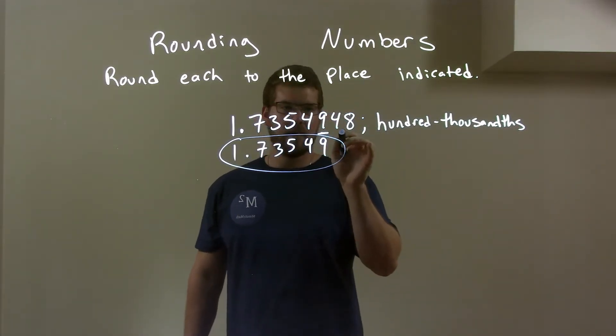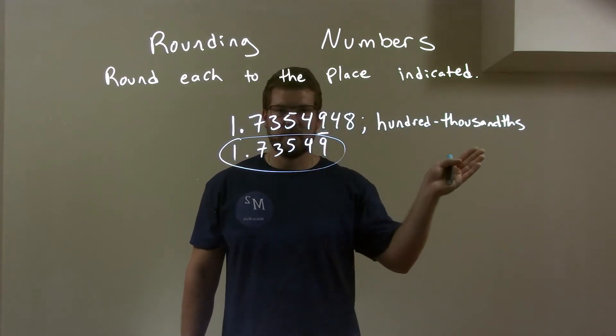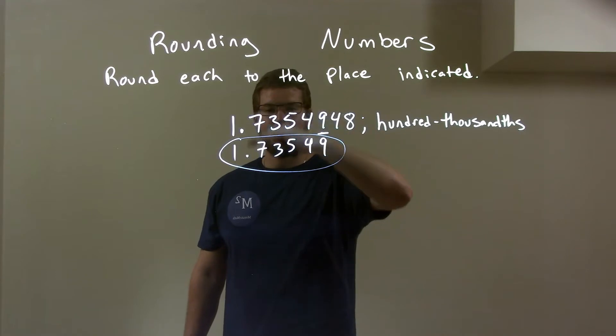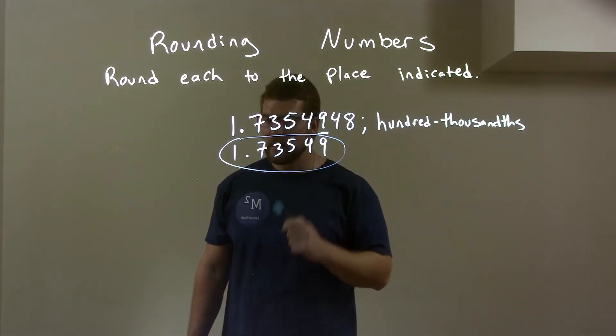And then to the right of that we have a 4. 4 causes the 9 to round down, saves the 9. 4, 8 disappears. We're left with everything else. We bring that down. And so we have, again, our rounded final answer: 1.73549.